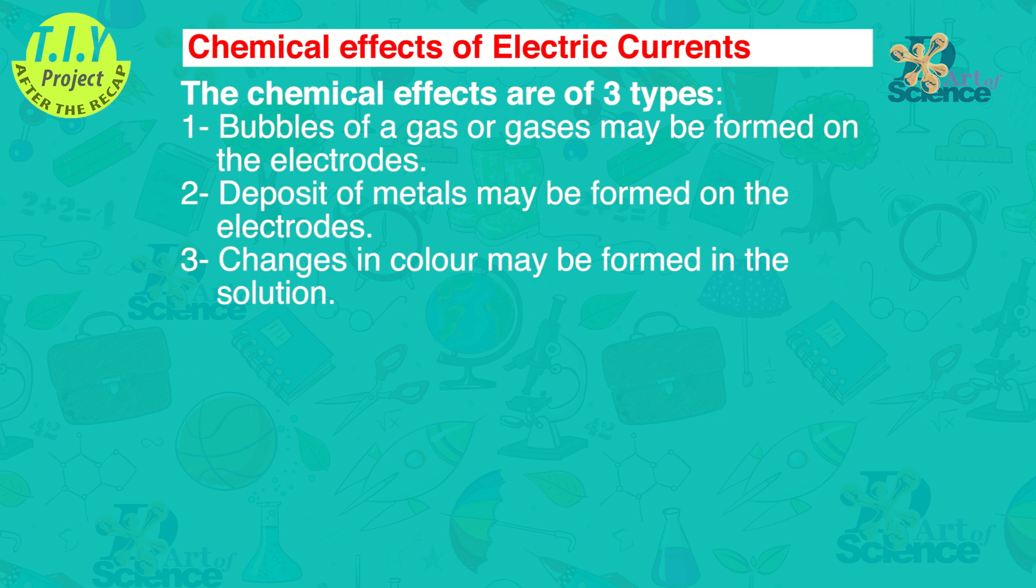The chemical effects are of three types. 1. Bubbles of a gas or gases may be formed at the electrodes. 2. Deposit of metals may be formed at the electrodes. 3. Changes in colour may be formed in the solution.